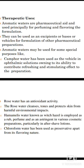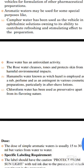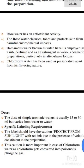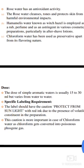The dose of simple aromatic water is usually 15 to 30 ml, but varies from water to water. For labeling requirements, the label should carry the caution 'protect from sunlight' in red ink, due to the volatile content in the preparation. This caution is especially important for chloroform water, as chloroform can get converted into poisonous phosgene gas.